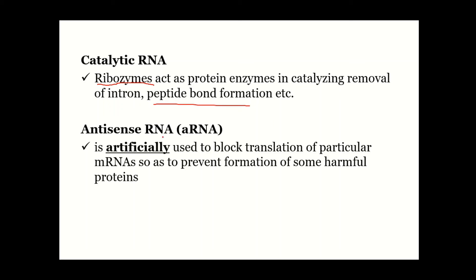Antisense RNA is artificially used to block translation of a particular mRNA so as to prevent formation of harmful proteins. It is complementary to a specific mRNA, so it is an artificial product that will target a specific mRNA to prevent harmful proteins from being made. This is useful in therapy or treatment.